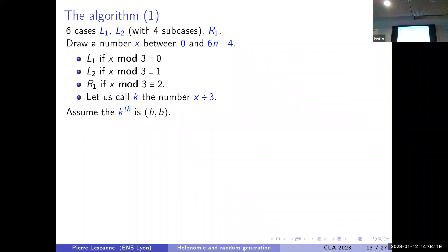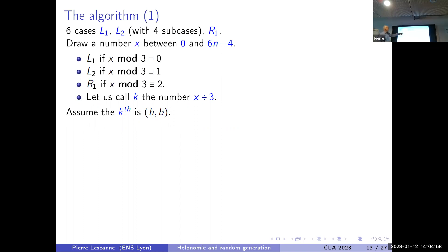The algorithm has six cases: L1, R1, and L2 with four subcases. You draw a number x between 0 and 6n minus 4. You consider case L1 if x mod 3 equals 0, case L2 if x mod 3 equals 1, and case R1 if x mod 3 equals 2. You call k the number x divided by 3.